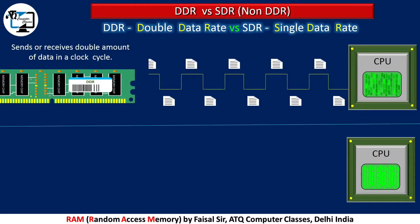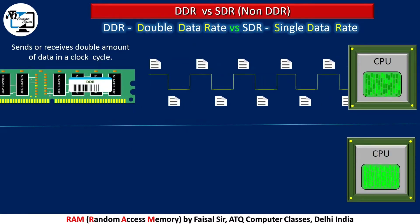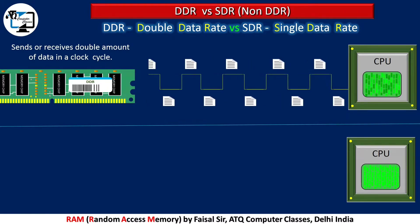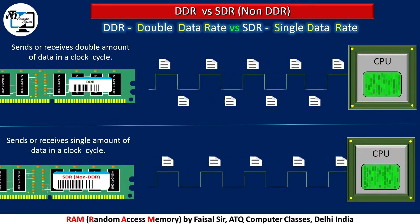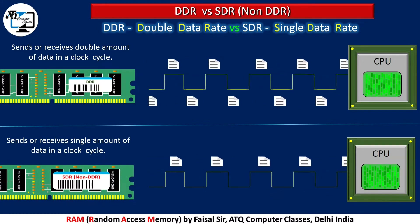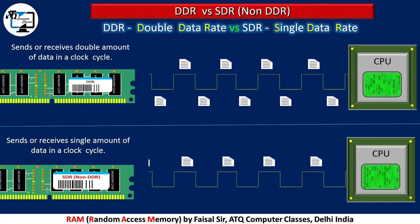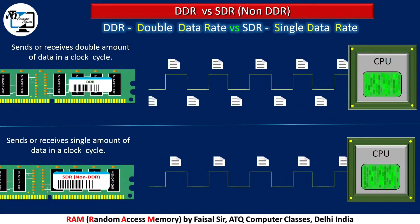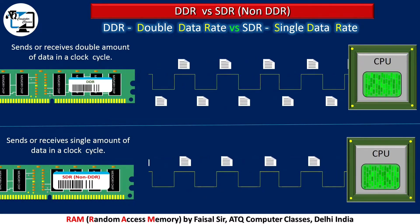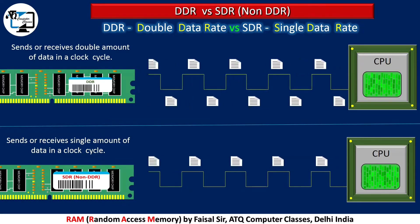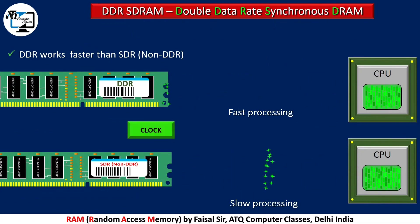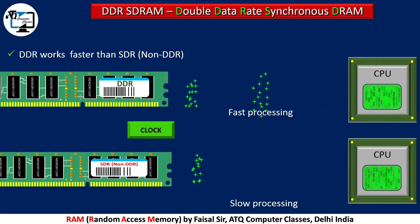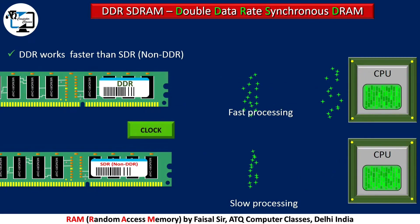DDR RAM sends or receives data on both the rising and falling edge of a clock cycle, as compared to non-DDR which sends or receives data only on the rising edge of a clock cycle. DDR sends twice the data compared to non-DDR, which is why DDR works faster than SDR.